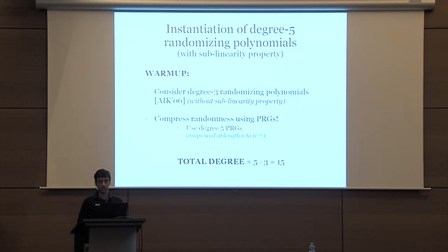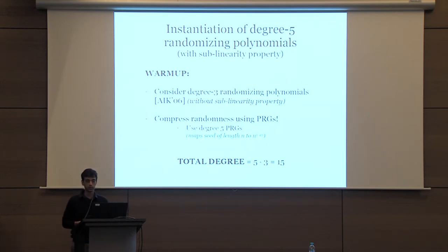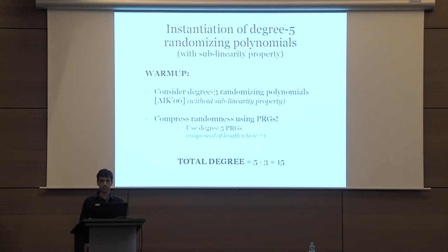Let's see how to instantiate the randomizing polynomials using degree-5 randomizing polynomials. The first attempt is to take a degree-3 randomizing polynomial scheme, but note this scheme does not have the sublinearity property—in particular, the size of the random string would be proportional to the circuit size. A trivial approach to compress randomness is to use PRGs. We want to use low-degree PRGs, specifically degree-5 PRGs that achieve polynomial stretch. Plugging the PRGs into the randomizing polynomial scheme gives a new scheme that achieves the sublinearity property, but now has degree 15.